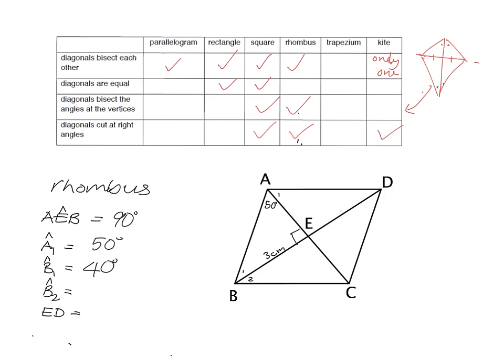Then B2 is easy — that's going to be 40 as well, because in a rhombus the diagonals bisect the angles at the vertices, so these two things are equal. And then ED — well, we know in any parallelogram, so in a rhombus, the diagonals bisect each other. So ED will be three centimeters.